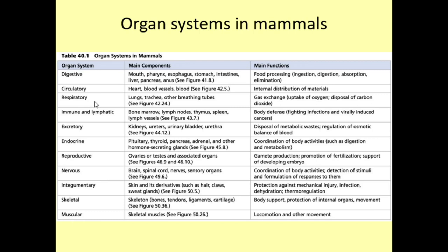The respiratory system includes the lungs, trachea, and other breathing tubes like the bronchi, bronchioles, and alveoli. Its function is gas exchange: our bodies use up vast quantities of oxygen — we need it to generate ATP energy for cellular work via cellular respiration — and we generate carbon dioxide as a waste product, particularly in the link reaction and Krebs cycle. We bring in oxygen and get rid of carbon dioxide through our lungs.